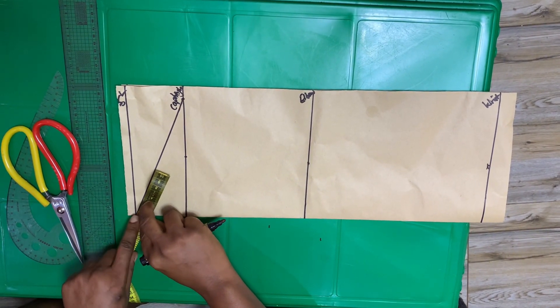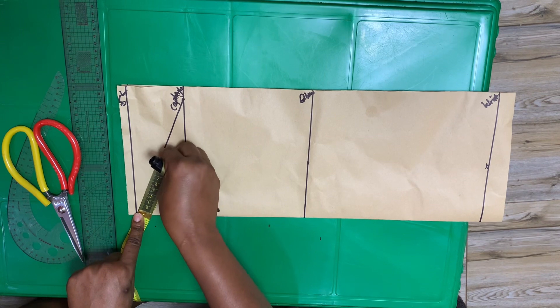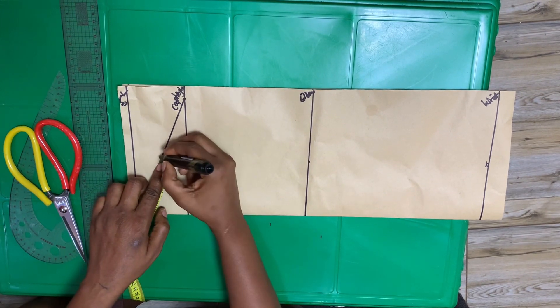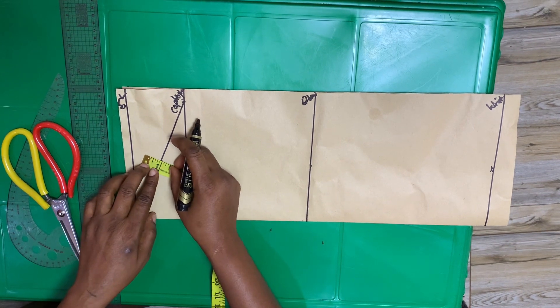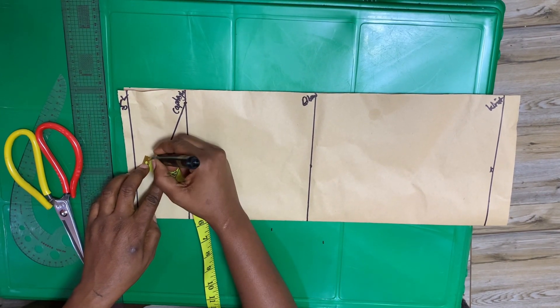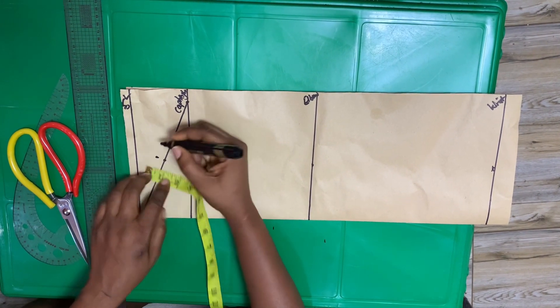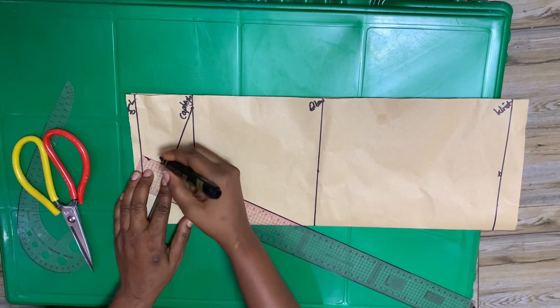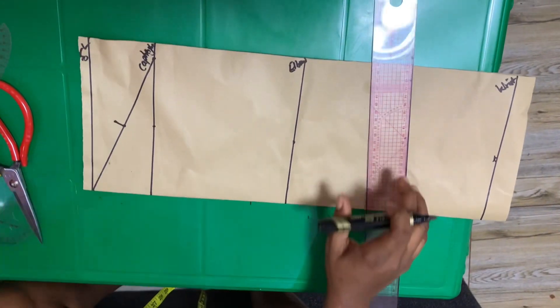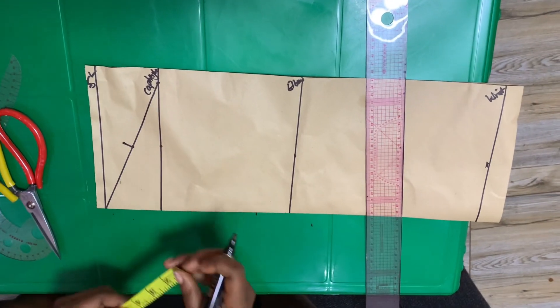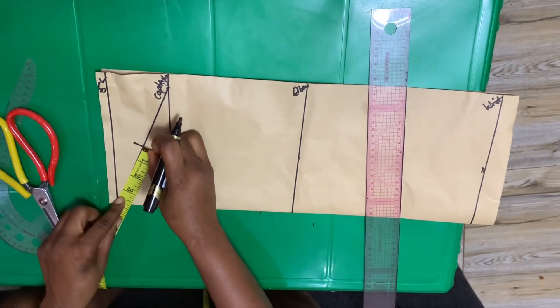After I draw that, I will divide that slant line into two. You don't need a calculator, just fold your measuring tape like this and mark it there. After we divide it into two, we will go up by half an inch.